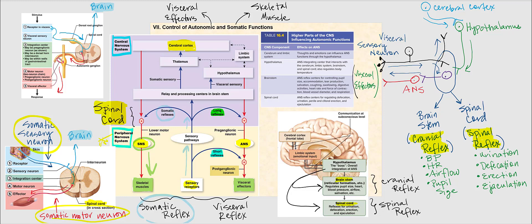Sensory information is also relayed to the cerebral cortex, which controls the somatic nervous system. Information from the cerebral cortex will ultimately make its way to the level of the spinal cord and can influence the somatic motor neuron. The control of autonomic functions is a bit more complicated than the control of skeletal muscle.